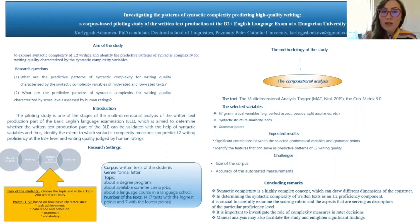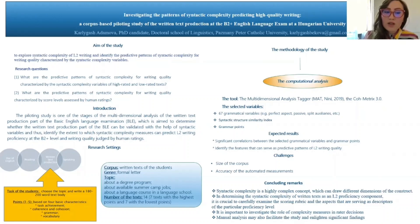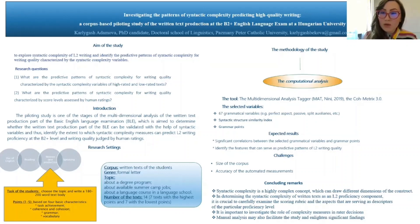Now, let me introduce you to the basic language examination, which stands at the center of the study. The basic language examination is aimed to prove that the students have achieved the B2 plus level of English, and it is the obligatory step for all English majors at a Hungarian university. It consists of four parts. At the written text production part, the students are asked to choose the topic and write up to 200 words. They are usually assessed on four basic characteristics, including task achievement, coherence and cohesion, grammar and vocabulary. Therefore, the analytic rating scheme is used as a scoring rubric for this examination.